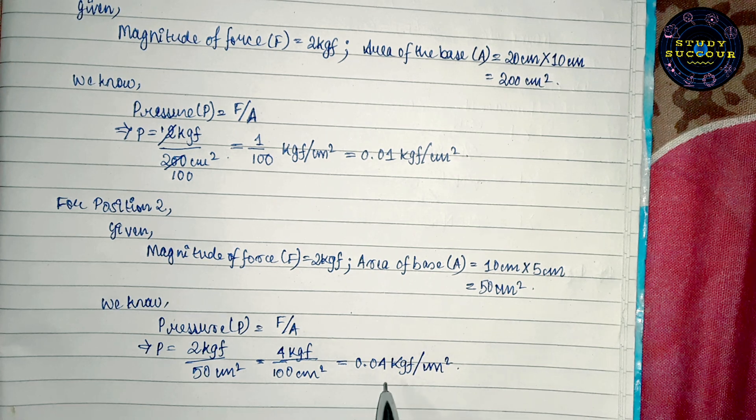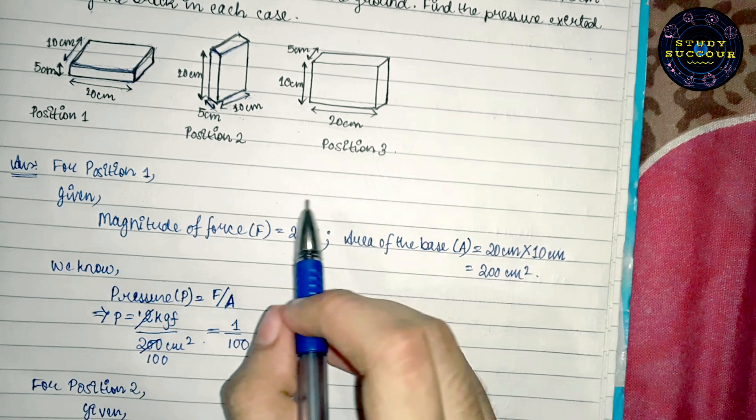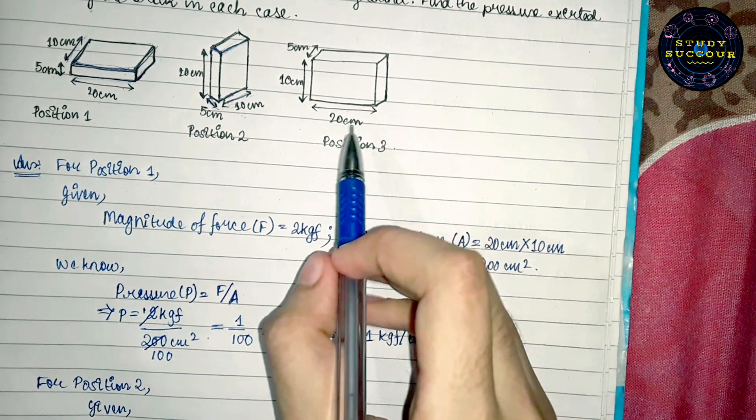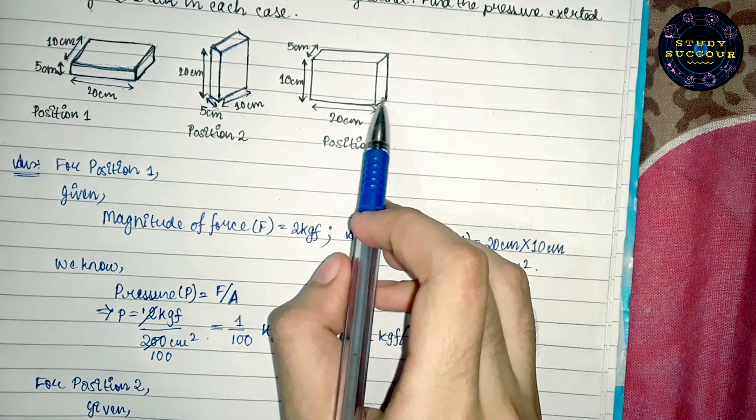This was for position 2. We see that the amount of force, that is the magnitude of force, for all positions remains same. What changes is only the area of the base on which it acts.